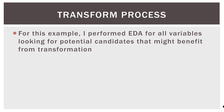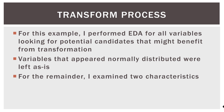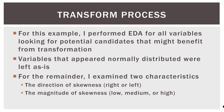So what's the transform process? For this example, I performed EDA for all variables, looking for potential candidates that might benefit from transformation. Variables that appeared normally distributed as is were left as is. For the other variables, I examined two characteristics: the direction of the skew or the skewness — right or left. Remember, right skewed means the long tail is to the right, left skewed means the long tail is to the left. And then the magnitude of the skewness, whether I consider it low, medium, or high. A low skewness might deviate slightly from a normal distribution, medium skewness a bit further in one direction, and a high level of skewness we might consider like an L or J shape distribution. I looked at those two things for all the variables that did not appear visually as normally distributed.